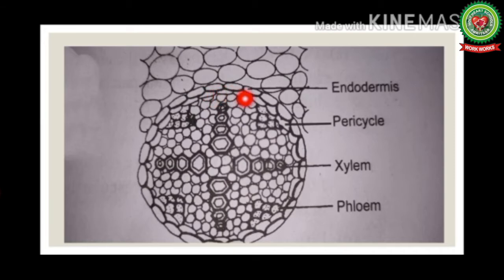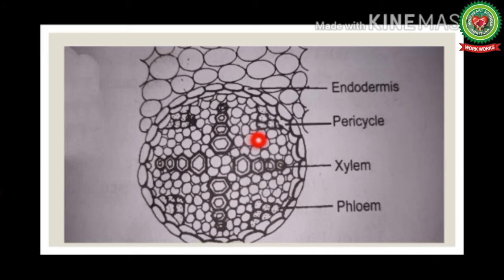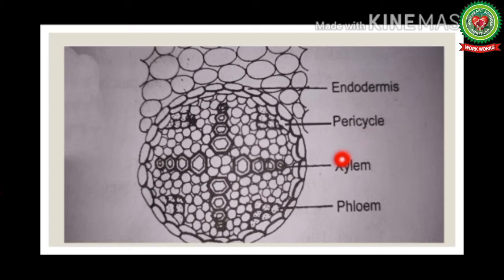Inner to the endodermis is a single layer of cells called the pericycle, which encloses the vascular bundles. It forms a cylinder of cells surrounding xylem and phloem, present adjacent to the endodermis. In most roots it is one cell thick, and pericycle cells contain abundant cytoplasm, retaining the capacity for growth and cell differentiation.